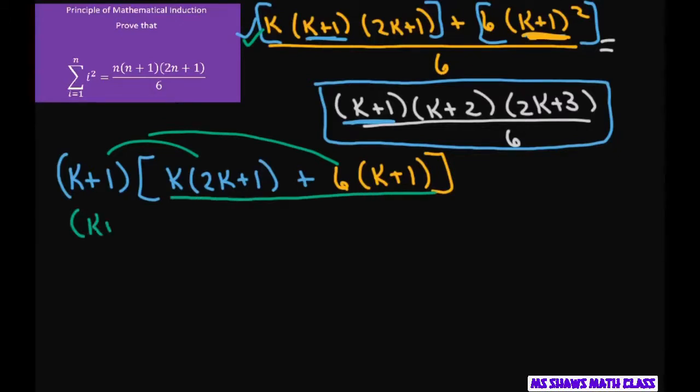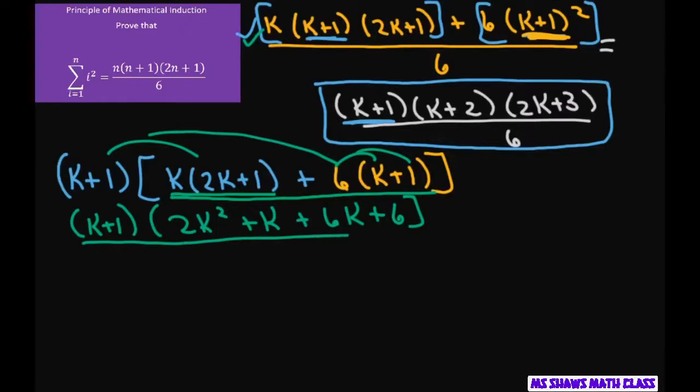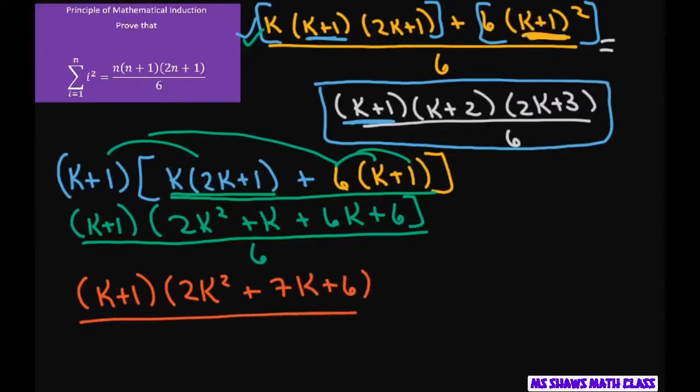Now let's simplify this part. So now we have k plus 1 times, so this part's going to be 2k squared plus k, and this part's going to be 6k plus 6. Now simplifying that – oh, by the way, all of this is all over 6 all the time. All right, so factoring, cleaning that up, we get 2k squared plus 7k plus 6 divided by 6.